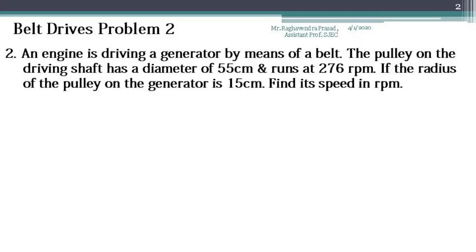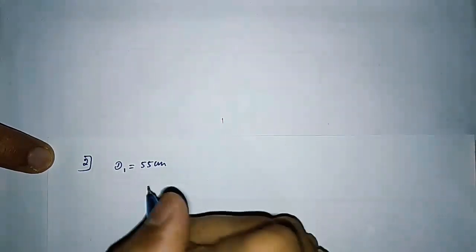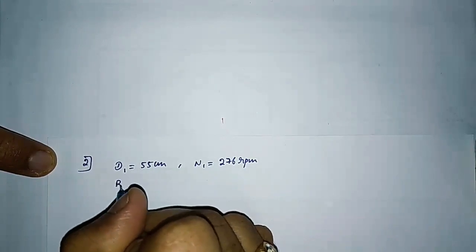We'll move on to the next problem. In this problem, an engine is driving a generator by means of a belt. The pulley on the driving shaft has a diameter of 55 cm and runs at 276 rpm. If the radius of the pulley on the generator is 15 cm, find the speed in rpm. So d1, the diameter of the driving shaft, is 55 cm and its corresponding speed n1 is 276 rpm.